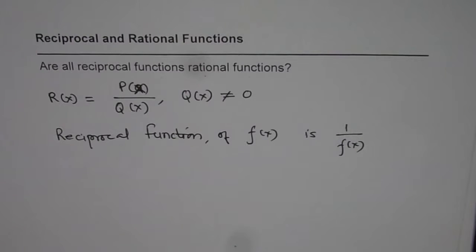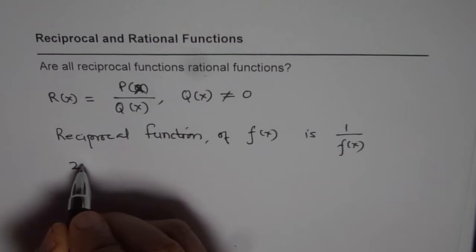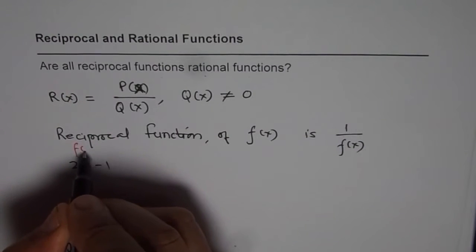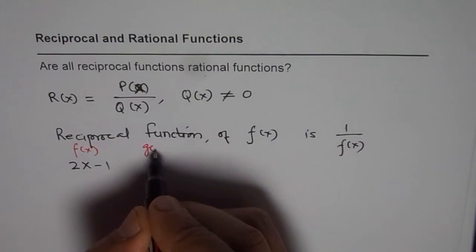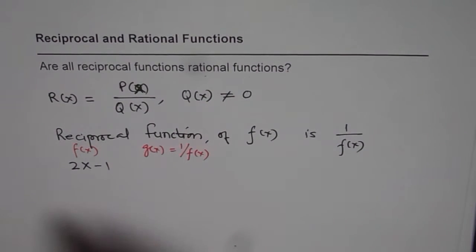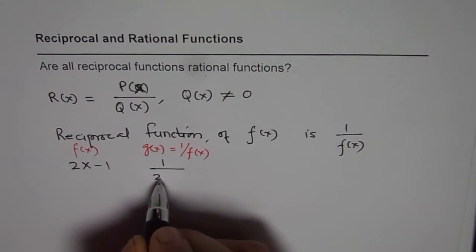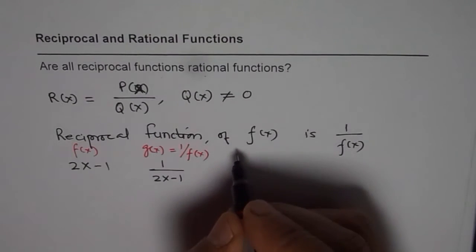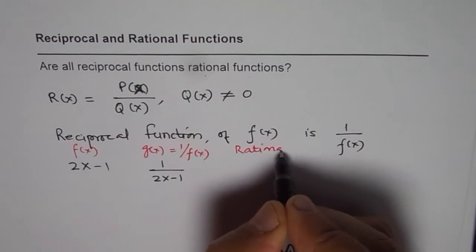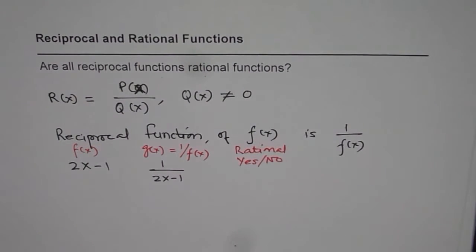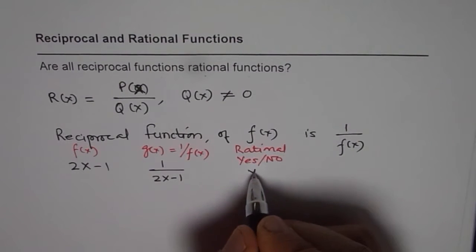So let's take some examples. If I have function, let me write here 2X minus 1. Let me give heading here as a function F of X, and here I will write G of F of X, which equals 1 over F of X. So in that case, 1 over F of X will be 1 over 2X minus 1. Now this is clearly a reciprocal function, and it is indeed a rational function.